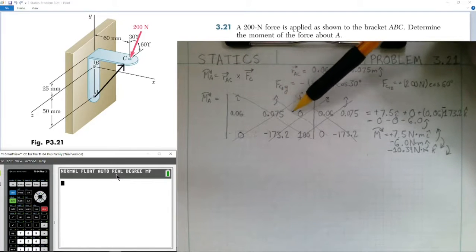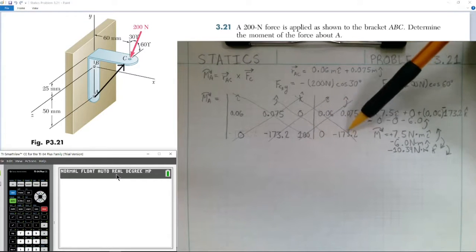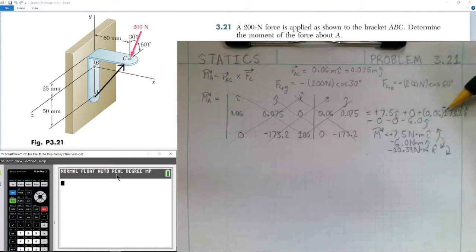Next diagonal, we have zero. Next value, we have 0.06 times negative 173.2 in the k-hat direction, illustrated here.